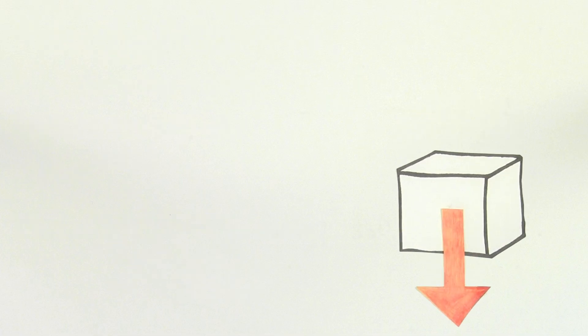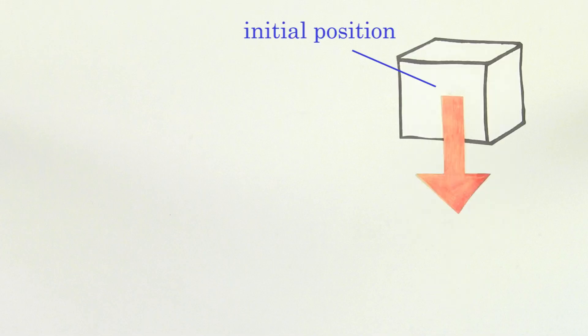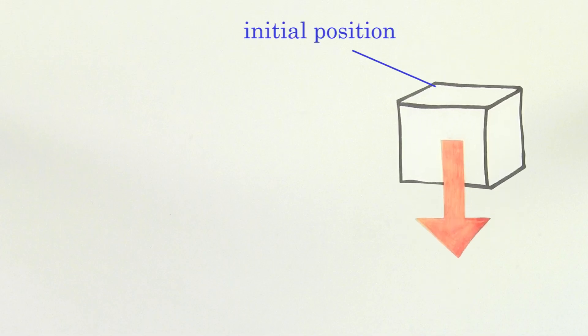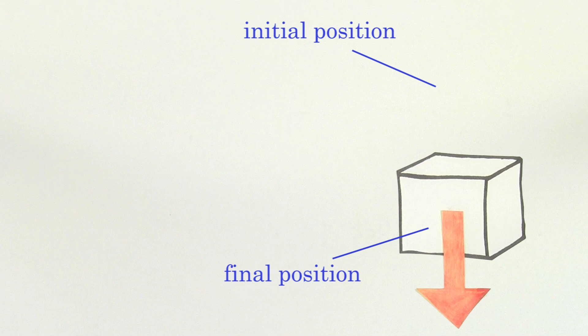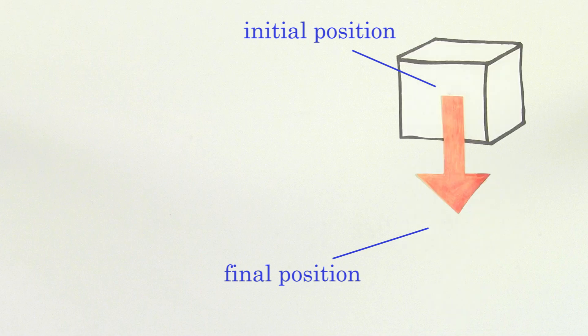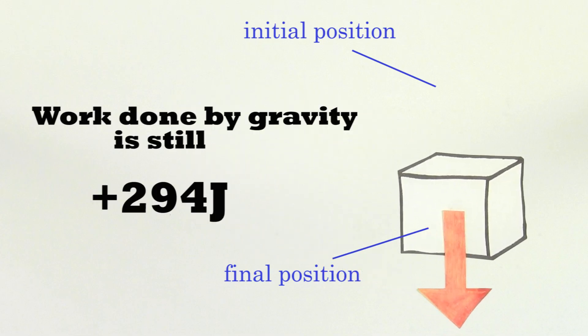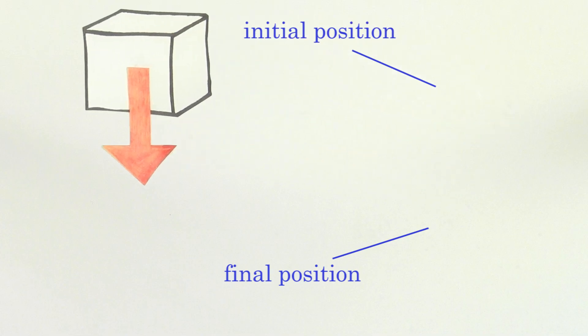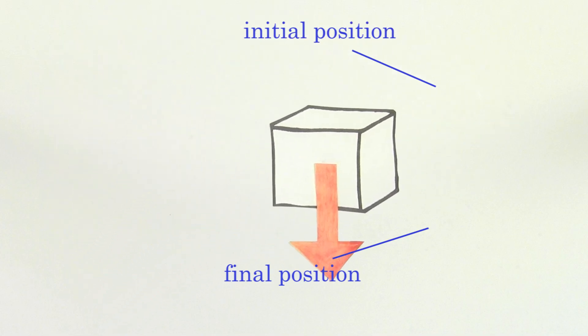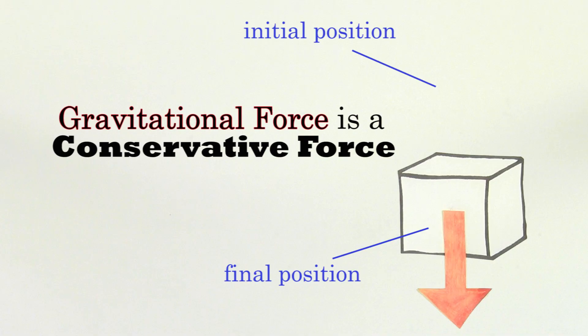In other words, the work done by the gravitational force doesn't depend on the specifics of the path taken by the mass. The work done by gravity only depends on the initial and final position of the mass. In fact, you could allow the mass to take any path from this initial point to the final point, and the work done by gravity is still just going to be 294 joules. Because the work done by gravity doesn't depend on the path taken, we call gravity a conservative force.